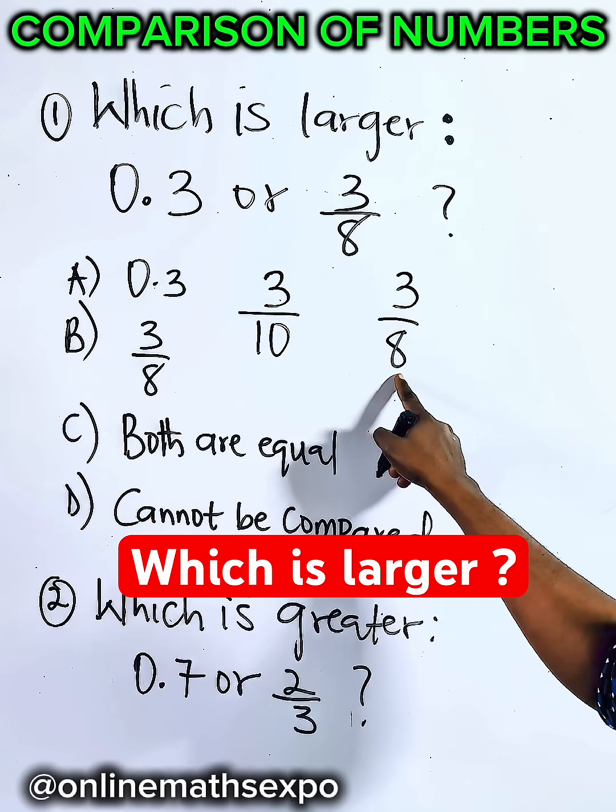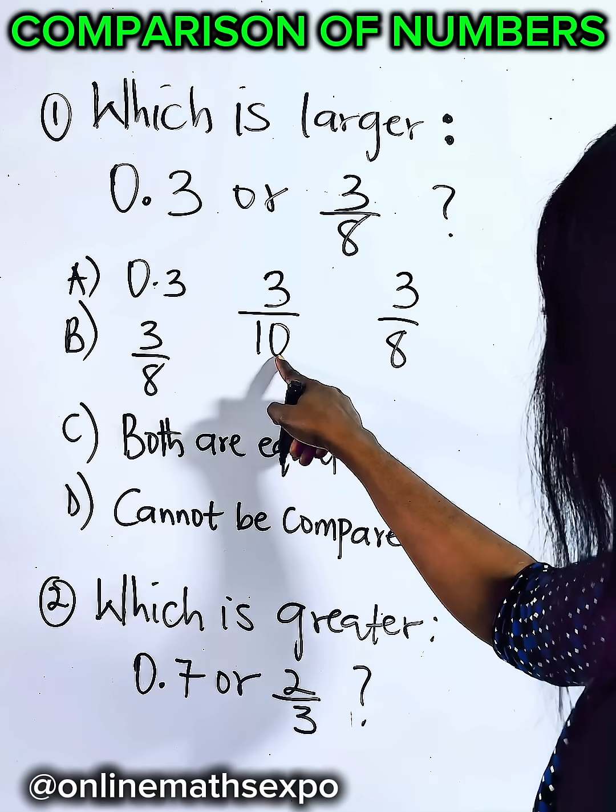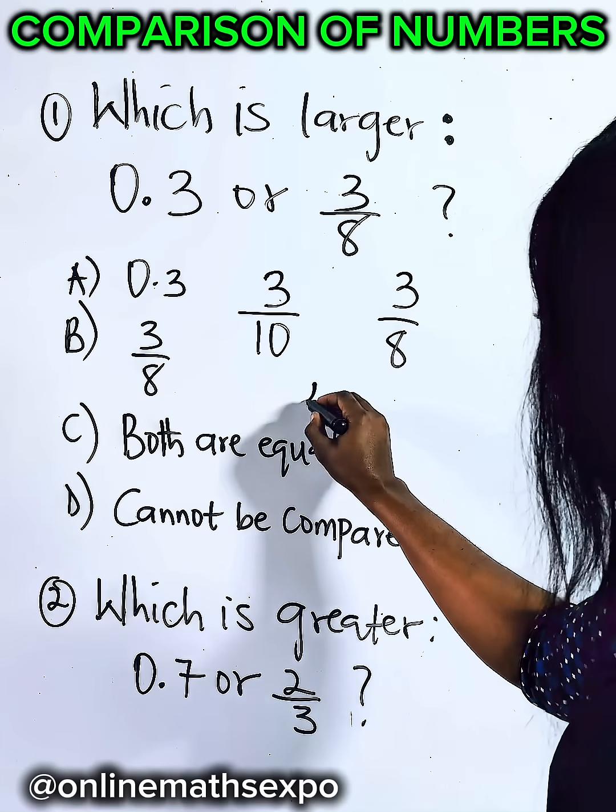The denominators are not the same, so choose a common denominator. The common denominator for 10 and 8, we can have 40.